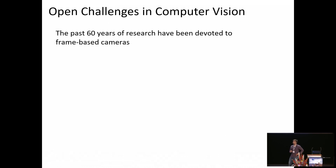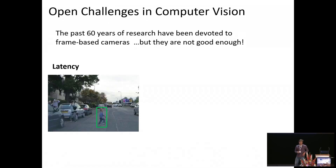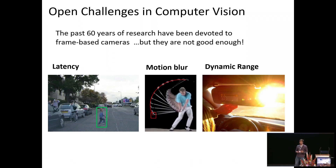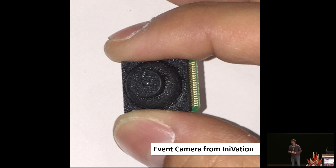The past 60 years has been devoted to using frame-based cameras for many computer vision algorithms. However, they still suffer from relatively high latency, motion blur, and relatively low dynamic range. At our lab, we're working with novel sensors called event cameras, which do not suffer from these problems. This here is an event camera — about the size of your finger — developed by iniVation, and you can buy one today.